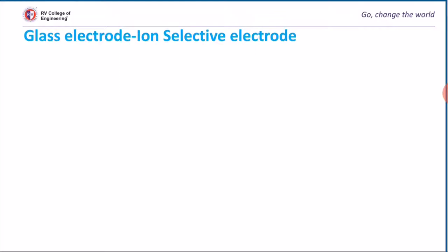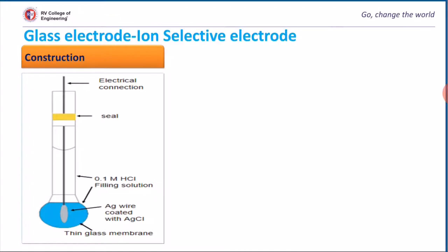One such example is glass electrode which is sensitive to H+ ions by neglecting other ions in solution. Now we will discuss its construction and working also.